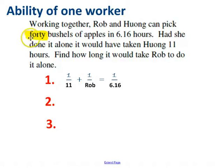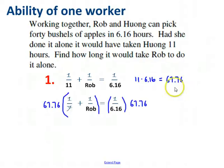Think of this as the job. The job is to pick all the bushels you need to pick. Who cares if it's 40 or if it's 4 or 444? The point is, how long does it take to pick all the apples you need to do? How long does it take Rob to do that? So this number 40 is never again going to appear in the problem. Instead, I've got to find that lowest common denominator again. 11 times 6.16 turns out to be 67.76. How do I use this number?